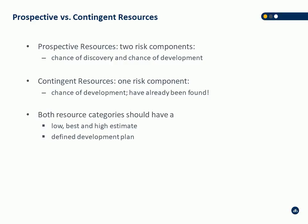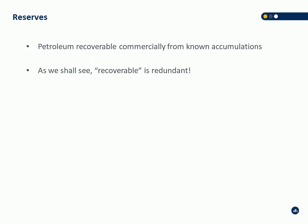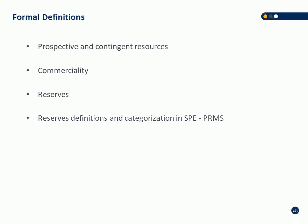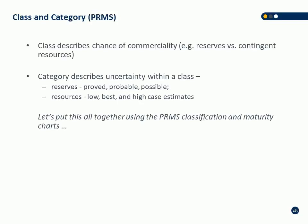PRMS is talking about ranges and uncertainty in estimates. The company or project has to have a plan in place — that goes back to the concept of a project. If you don't have a project and a development plan, you can't assign contingent or prospective resources. Running into reserves: petroleum recoverable commercially from known accumulations. These next slides cover formal definitions right out of PRMS on classes and categories — the McKelvey box. Category describes uncertainty — proved, probable, possible or low, best, high — whereas class describes commerciality: reserves, contingent resources, or prospective resources.